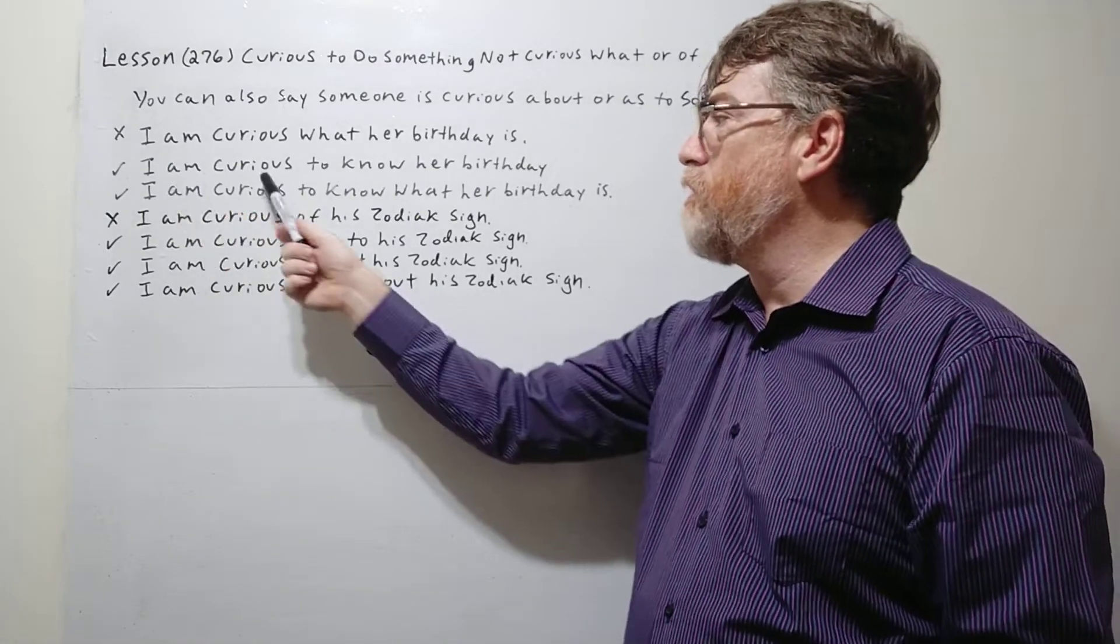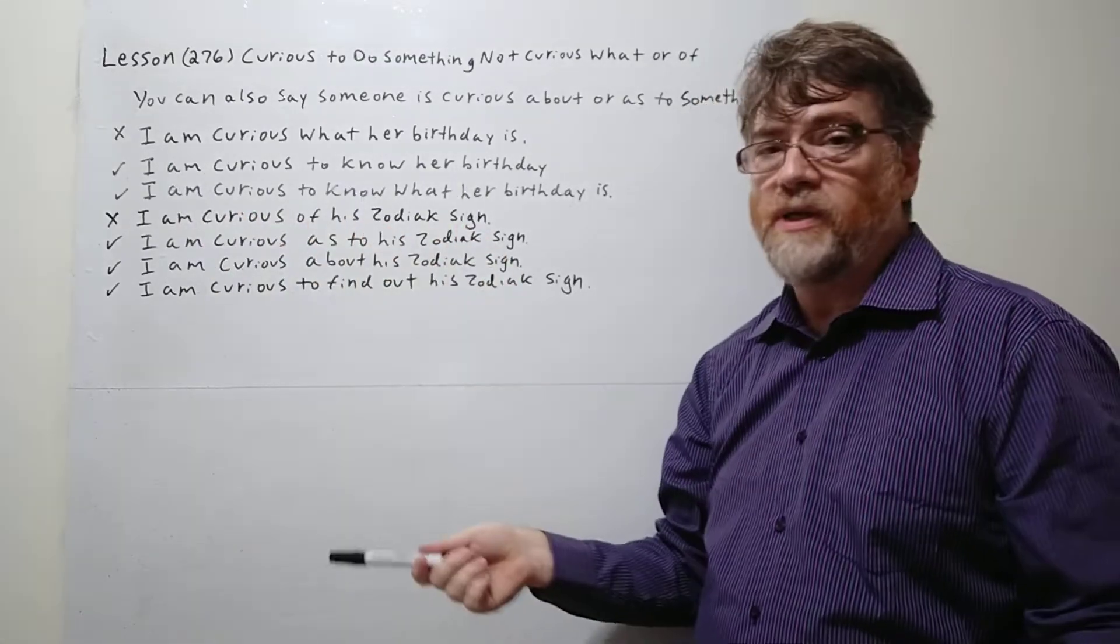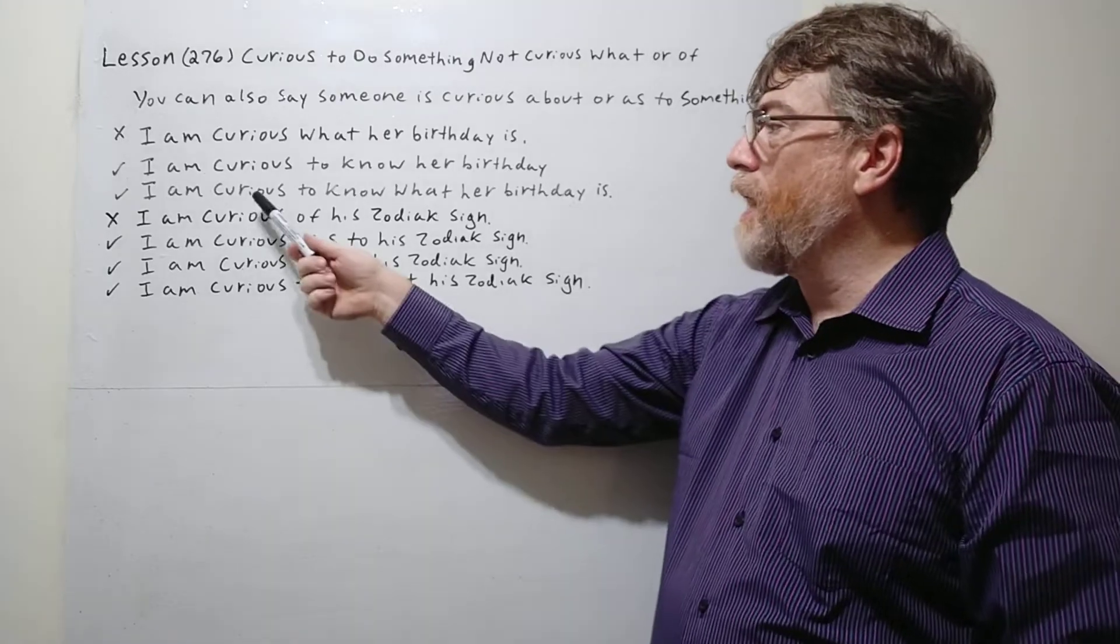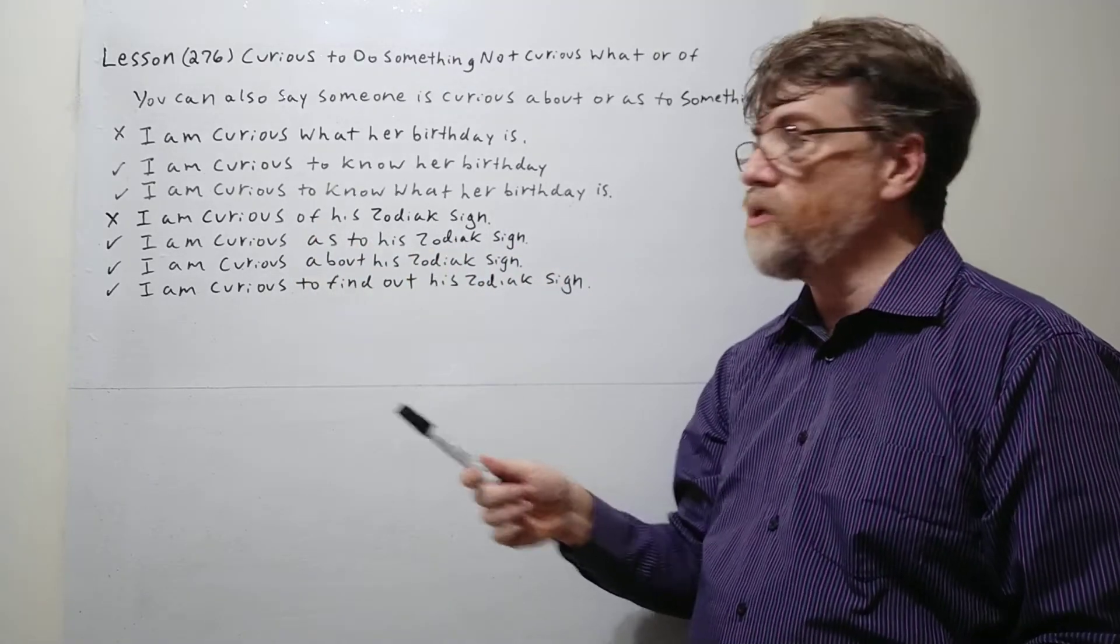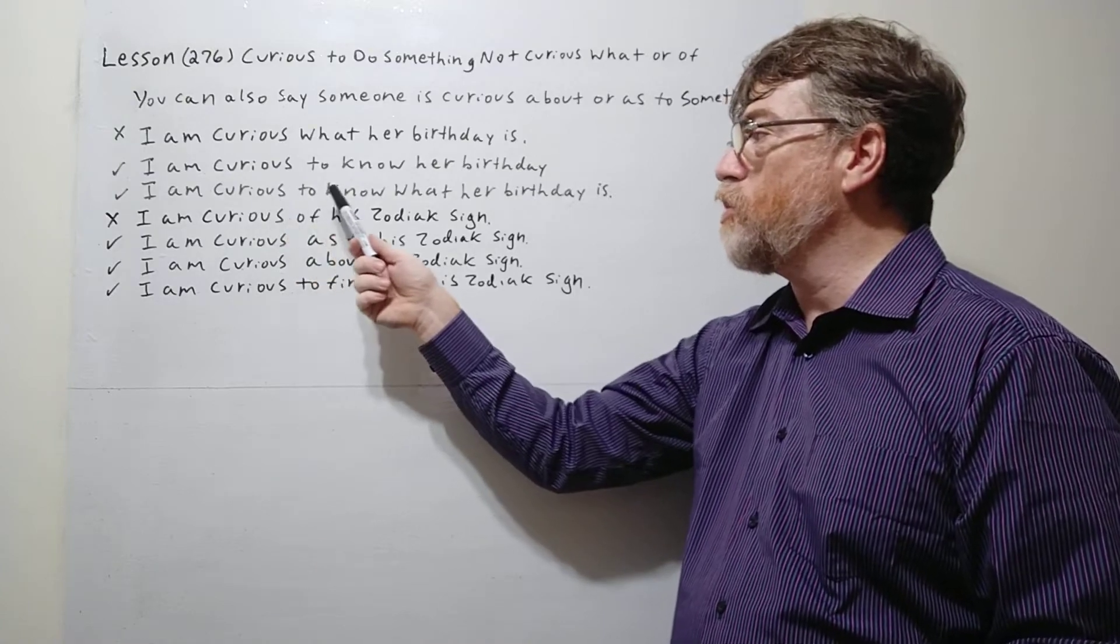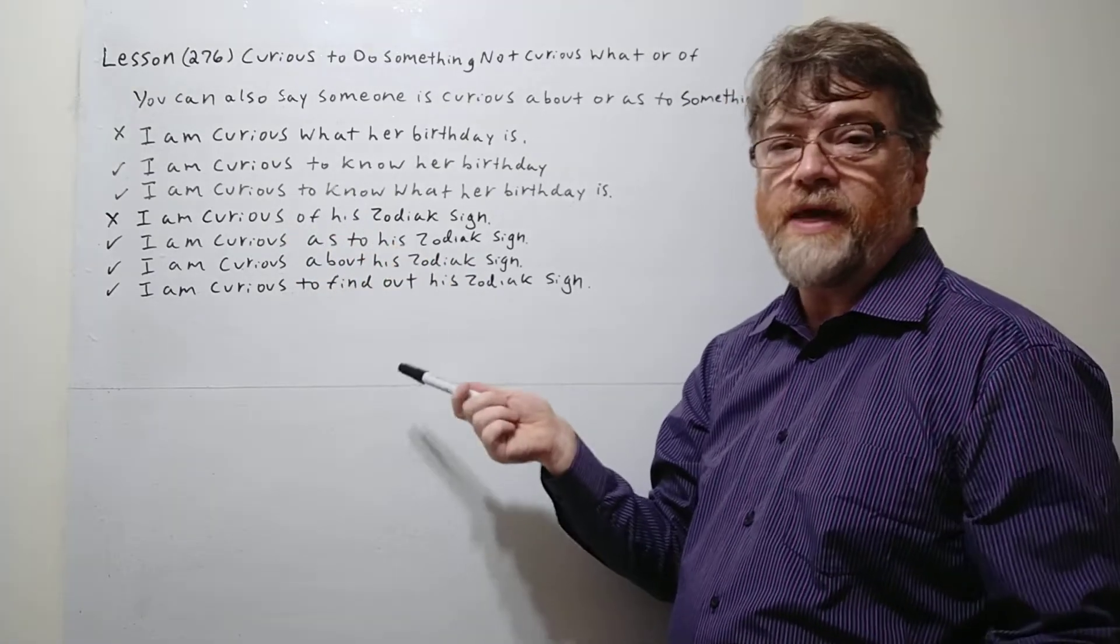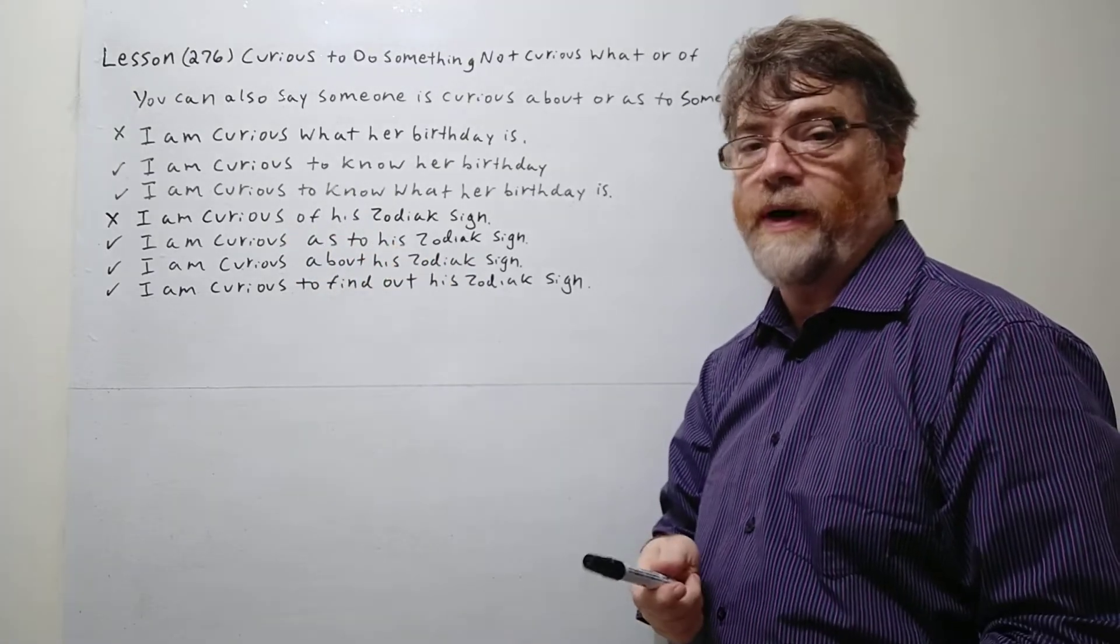This would be correct: I'm curious to know her birthday. That's very simple. I am curious to know what her birthday is. That would be okay too. So you have to still be saying curious to do something, and then you could add the what. That would be fine as well.